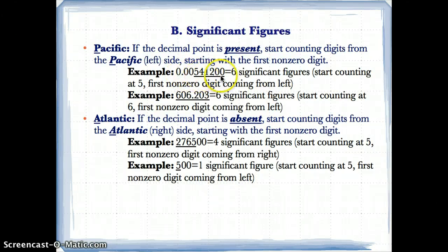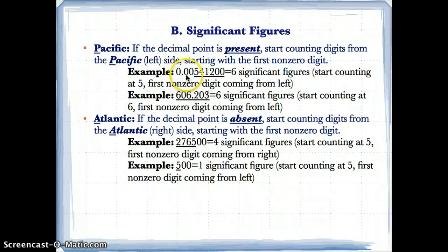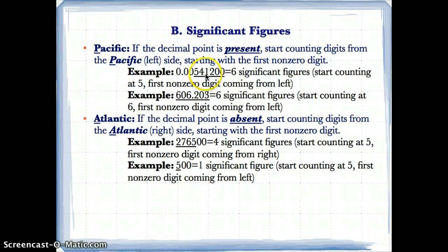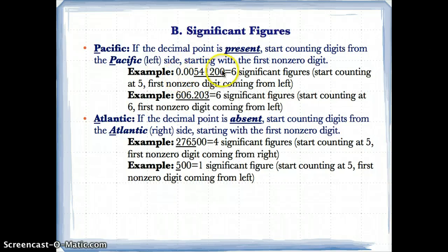In example one, the decimal point is present, so we count from the left starting at the first non-zero digit. The first three zeros are ignored because we're looking for a non-zero digit. We start counting at the five — five, four, one, two, zero, zero — giving six significant figures. Once you start counting, you don't stop until the end.